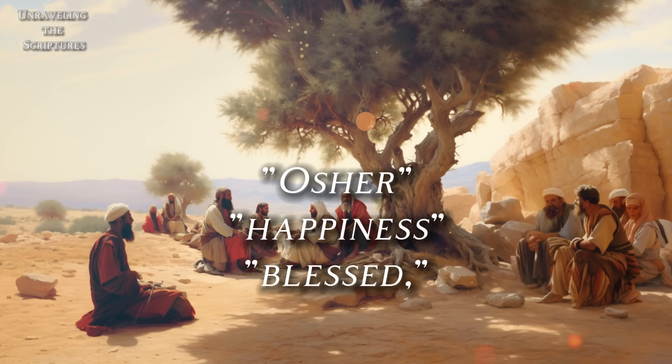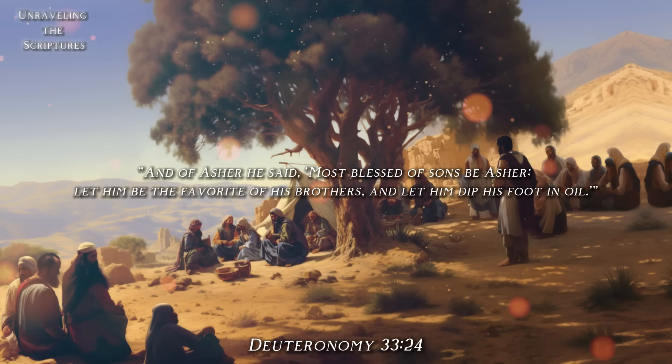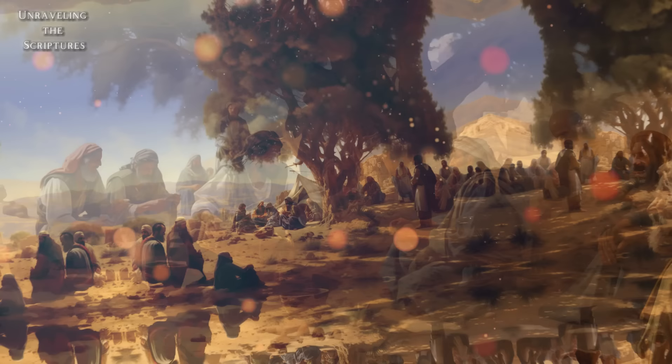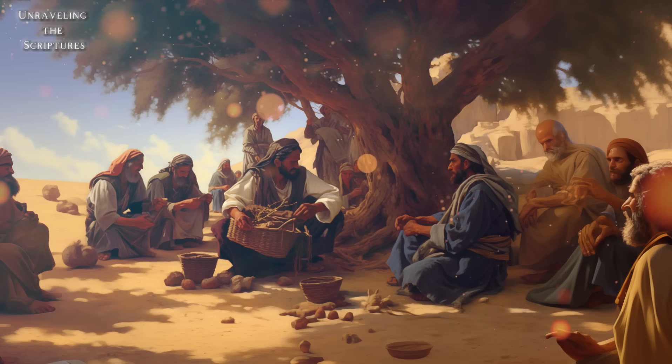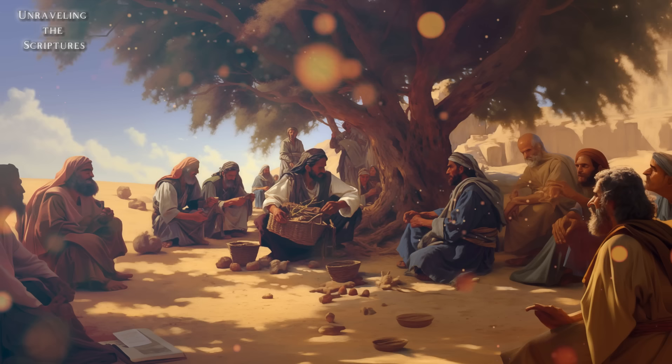The tribe of Asher, whose name derives from the Hebrew word 'Asher' meaning 'happiness' or 'blessed,' has the olive tree as its symbol. This symbolic choice is related to the blessing given to the tribe of Asher, which includes olive oil, as found in Deuteronomy 33:24: 'Most blessed of sons be Asher, let him be the favorite of his brothers, and let him dip his foot in oil.' The blessings also mention the abundance of food: 'Bread from Asher shall be rich, and he shall yield royal dainties' (Genesis 49:20). This underscores the wealth and plenty that the tribe of Asher would enjoy.